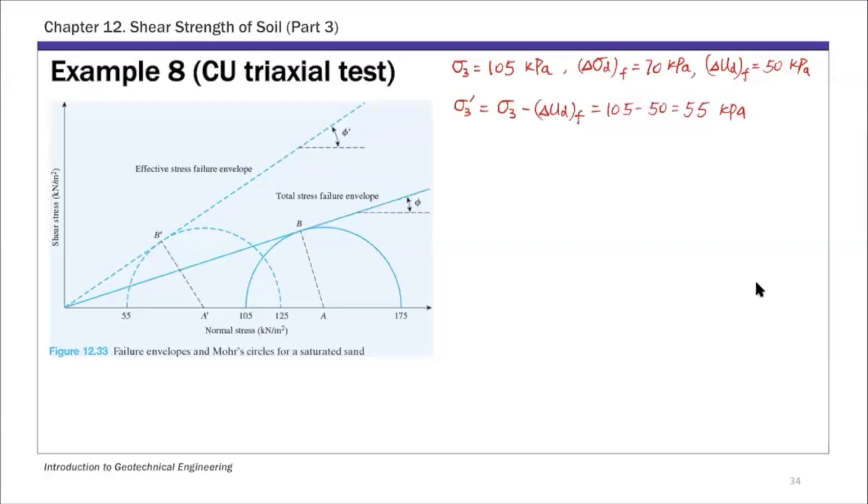For the major principal stress, the total version, sigma 1 is sigma 3 plus the deviator stress at failure. That's 105 plus 70, equals 175 kPa. The effective major principal stress is the total minus the pore pressure: 175 minus 50 equals 125 kPa.